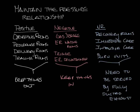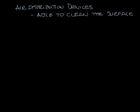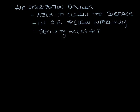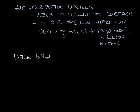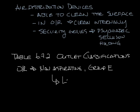Now let's talk about air distribution devices. There are a couple things you need to know about air distribution devices used in healthcare. First, you need to be able to clean the surface of the diffusers, and in operating rooms you need to be able to clean them internally as well. You also have to install security grilles in psychiatric seclusion and holding patient rooms. Table 6.7.2 of ASHRAE 170 tells you what outlet classification to use for the different healthcare spaces. For instance, operating rooms need to have non-aspirating supply diffusers from group E. The groups correspond to outlet classifications in the ASHRAE handbook — these are basically the laminar flow diffusers discussed a couple weeks ago.